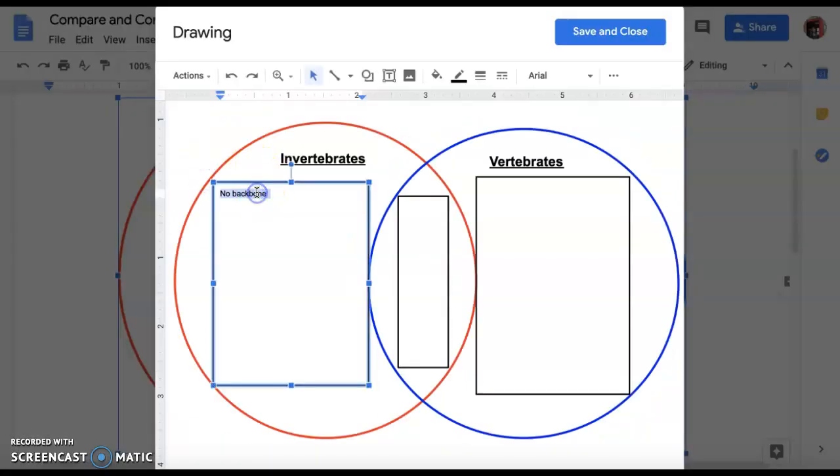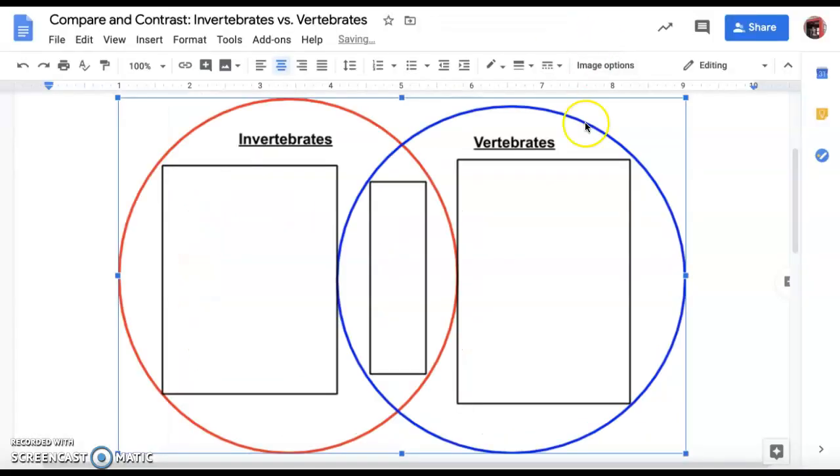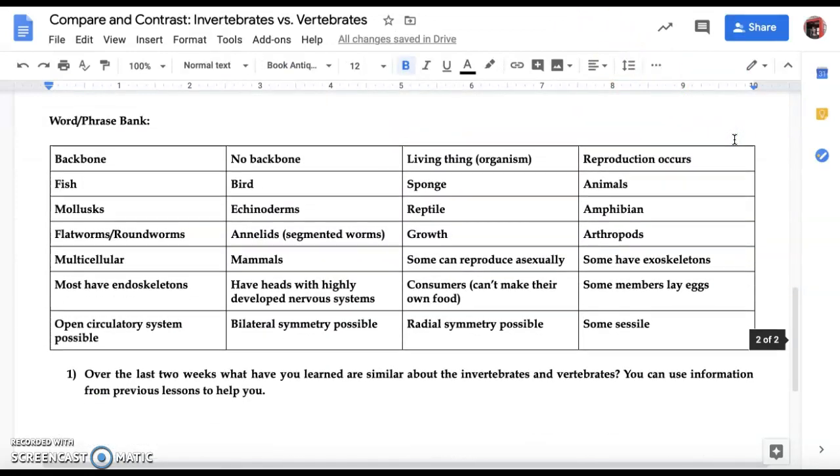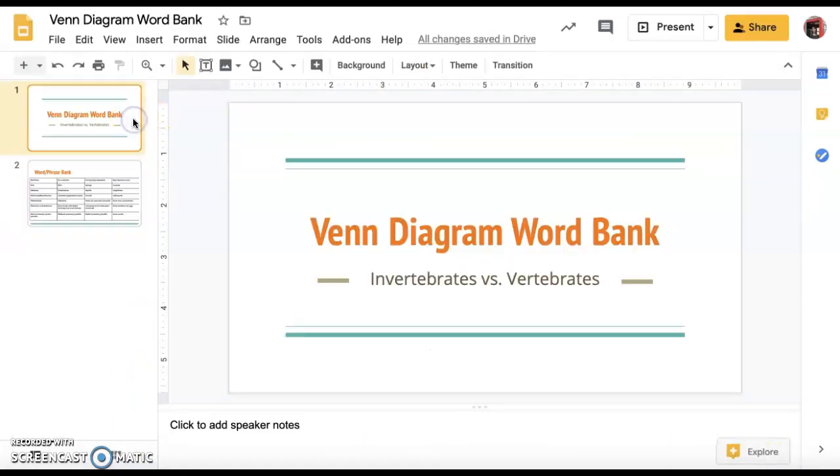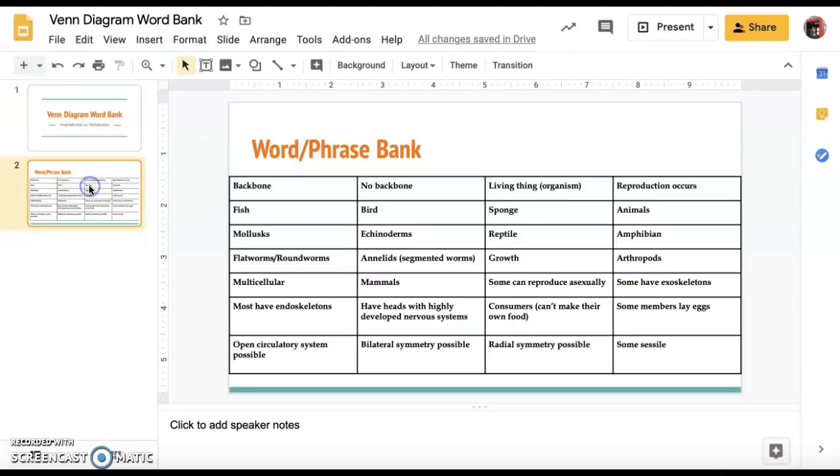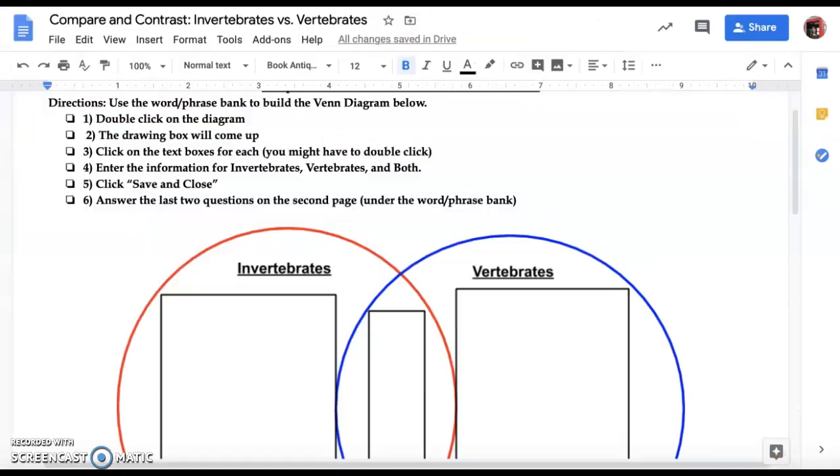I can also take out any mistakes, so don't worry about making a mistake and having to correct it. You can do so as well. Now, if you're worried about being able to see the word or phrase bank on the second page, I've made it possible for you to just go between two tabs. You have a Google slide presentation that's just posted with this word bank so you can go back and forth as well and you don't have to worry about that.